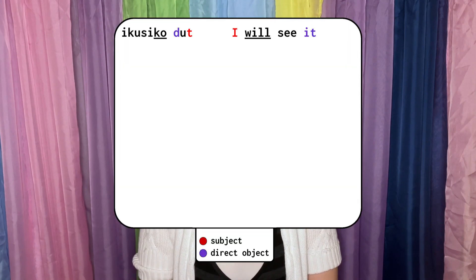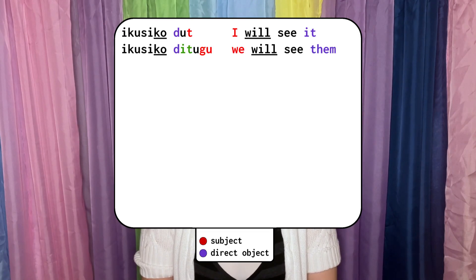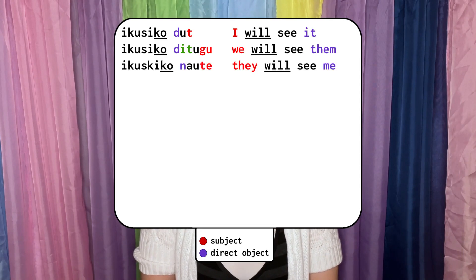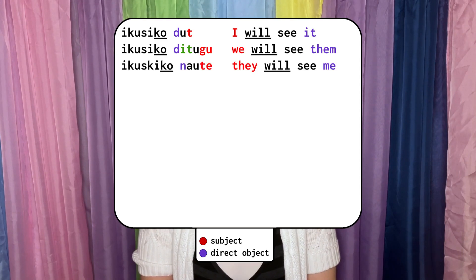So, you take ikushiko and add on the auxiliary verb, which is the transitive form of isan, because 'to see' takes a transitive meaning here, and you have your future tense. Ikushiko dut — I will see it. Ikushiko ditugu — We will see them. Ikushiko not they — They will see me.